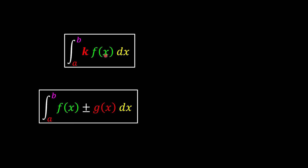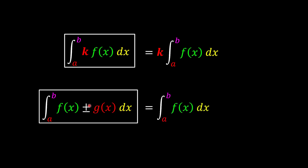If there is a constant in front of the function, we can take it out first and then integrate the function from a to b. When we have two functions combined with a plus or minus, we can separate them based on the sign — each with the same boundary — and compute them individually.